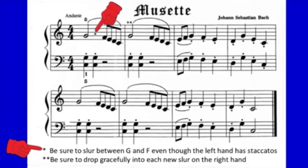Notice there's an asterisk in measure one. That means there's a note at the bottom with one asterisk that says: be sure to slur between G and F, even though the left hand has staccatos. That's going to be really important. We'll demonstrate in a moment.